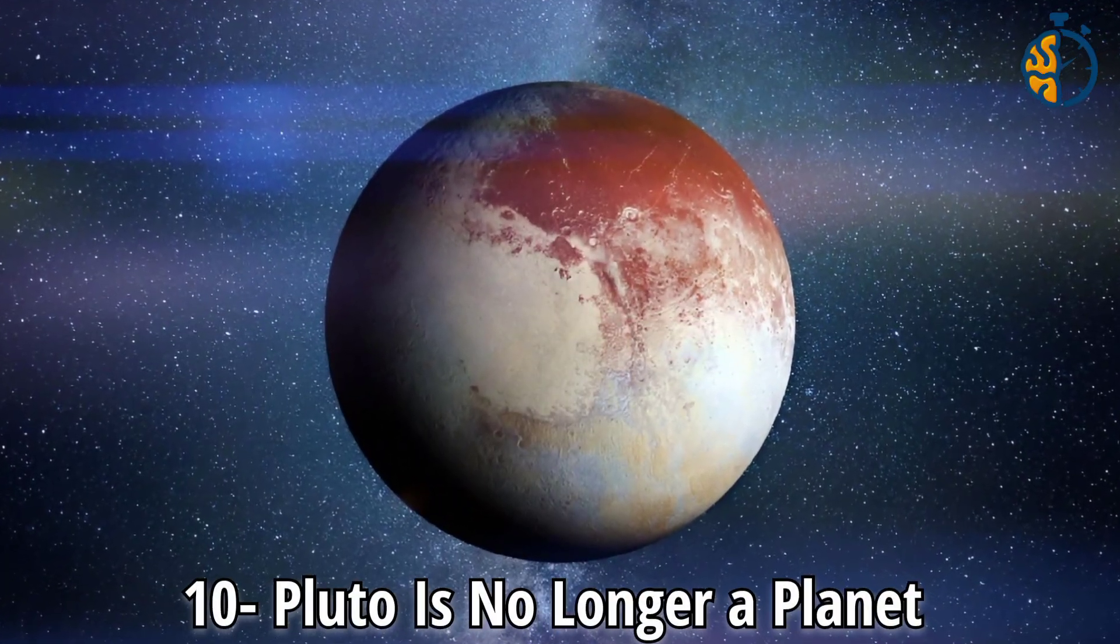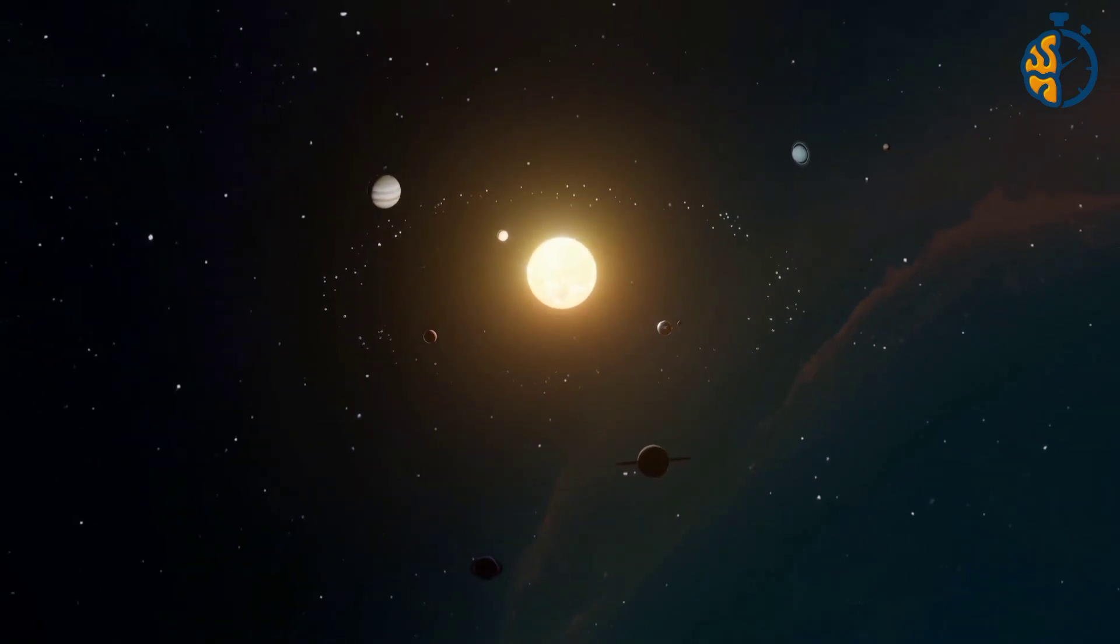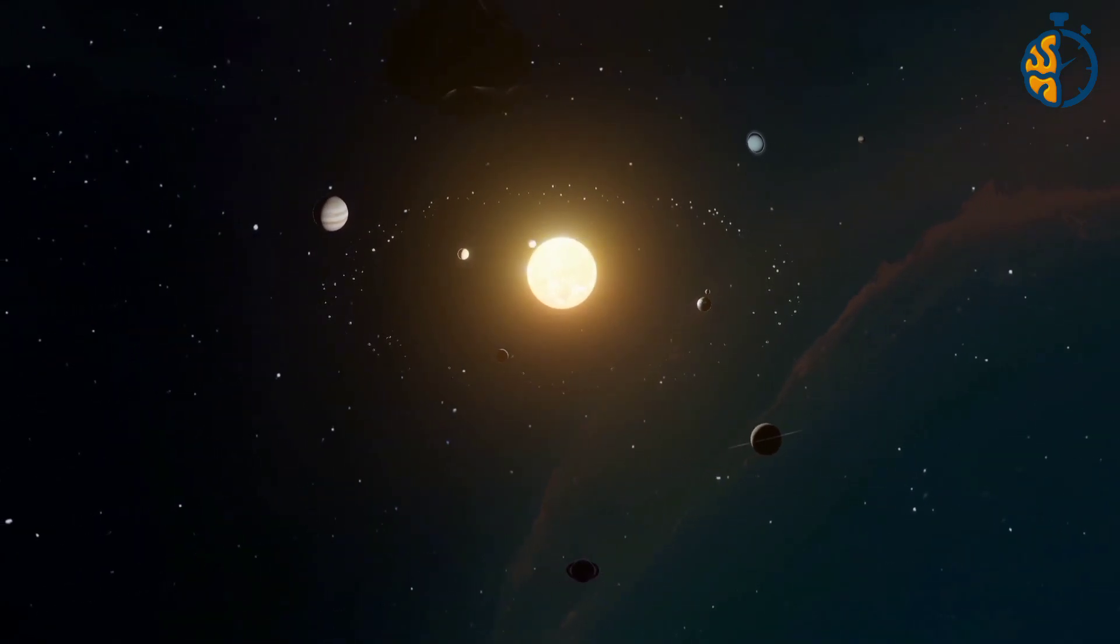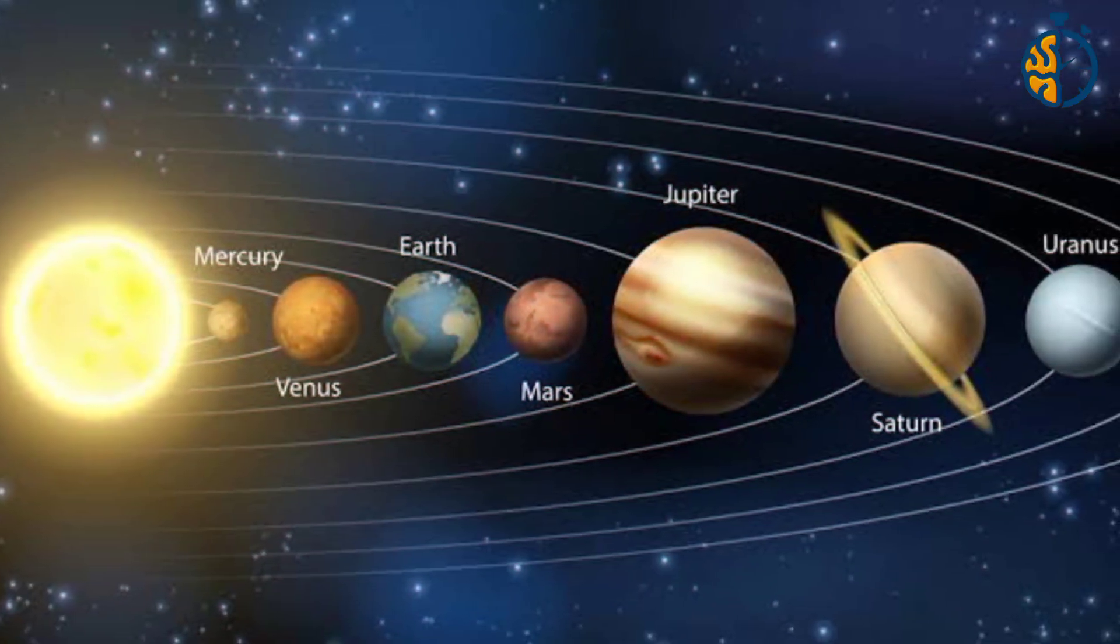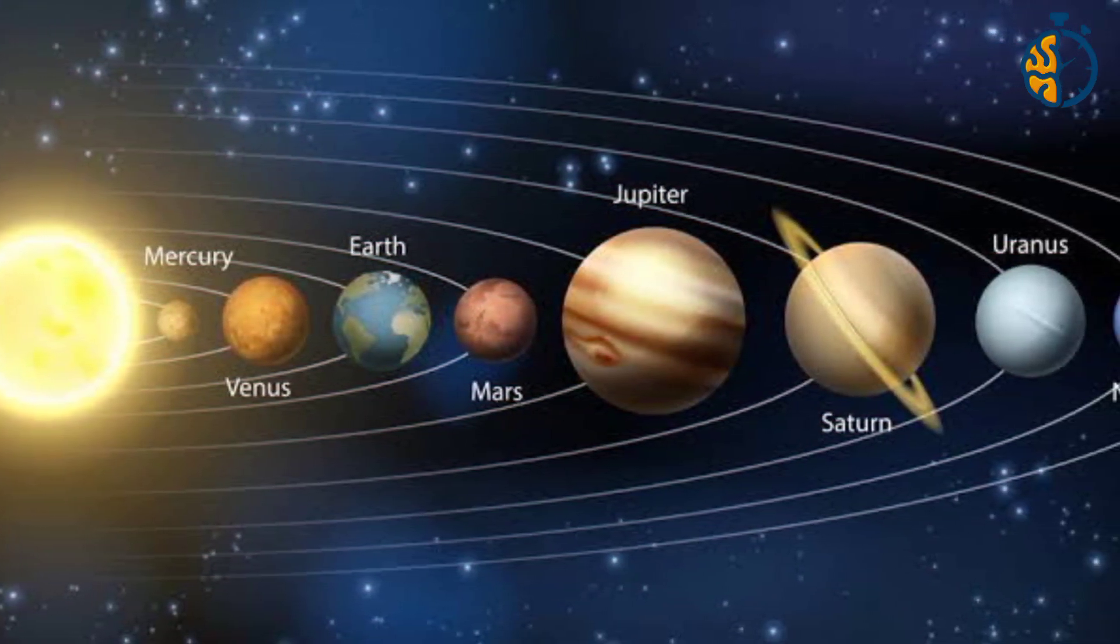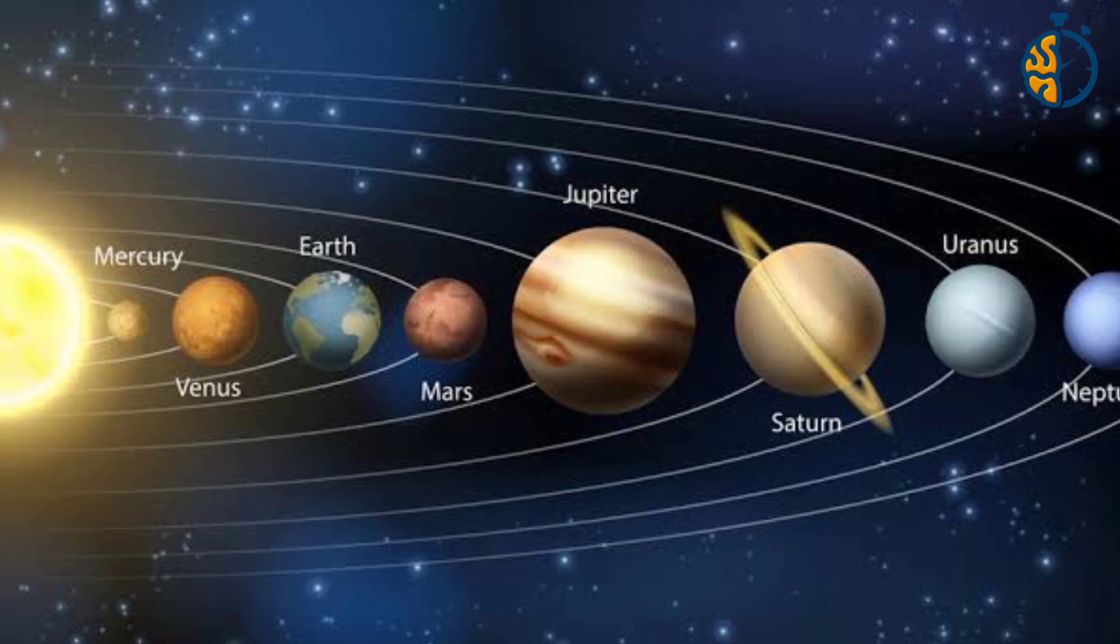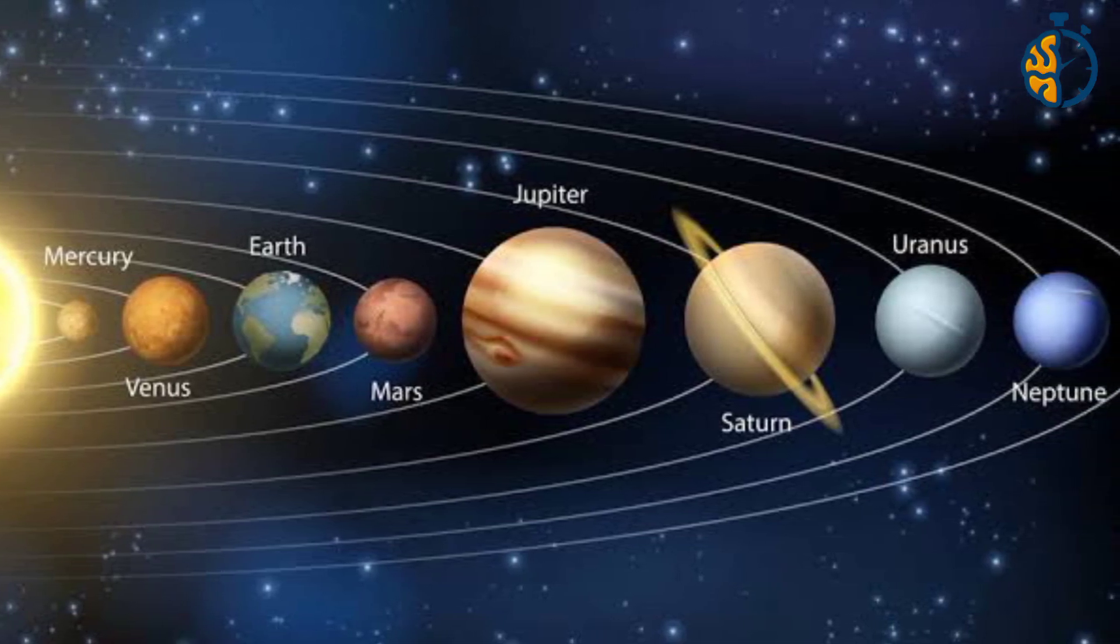Number 10. Pluto is no longer a planet. It was known until a certain period that the number of planets in the solar system is nine planets revolving around the sun, and they are Mercury, Venus, Earth, Mars, Jupiter, Saturn, Uranus, Neptune, and Pluto, the smallest planets in the solar system.